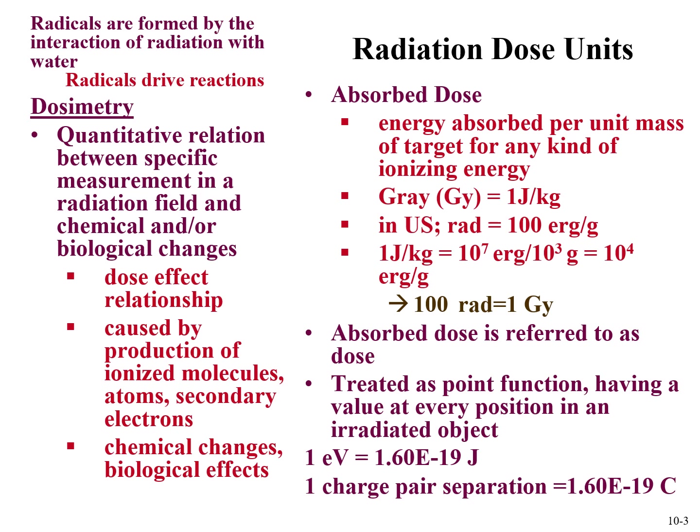One effect of all these interactions of radiation with matter, when it comes to radiation safety, is to try to quantify the influence of a certain radiation field on radiolysis and eventually health concerns. This is the area of dosimetry, where you try to get a relationship between a measurement, a radiation field, and a chemical or biological change. When particles interact with matter, they cause ionized molecules, secondary electrons, etc., and these in turn drive chemical or biological changes.